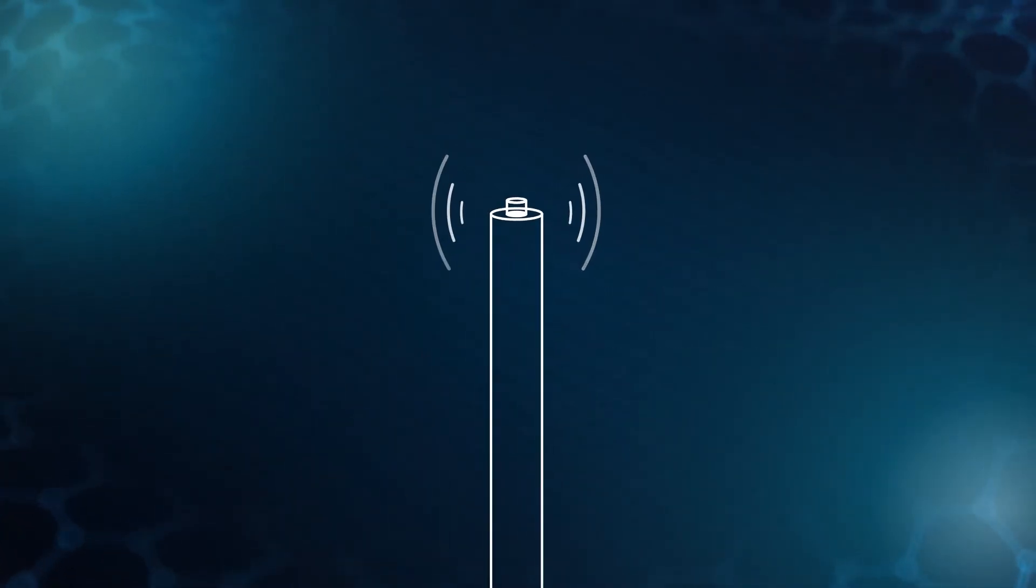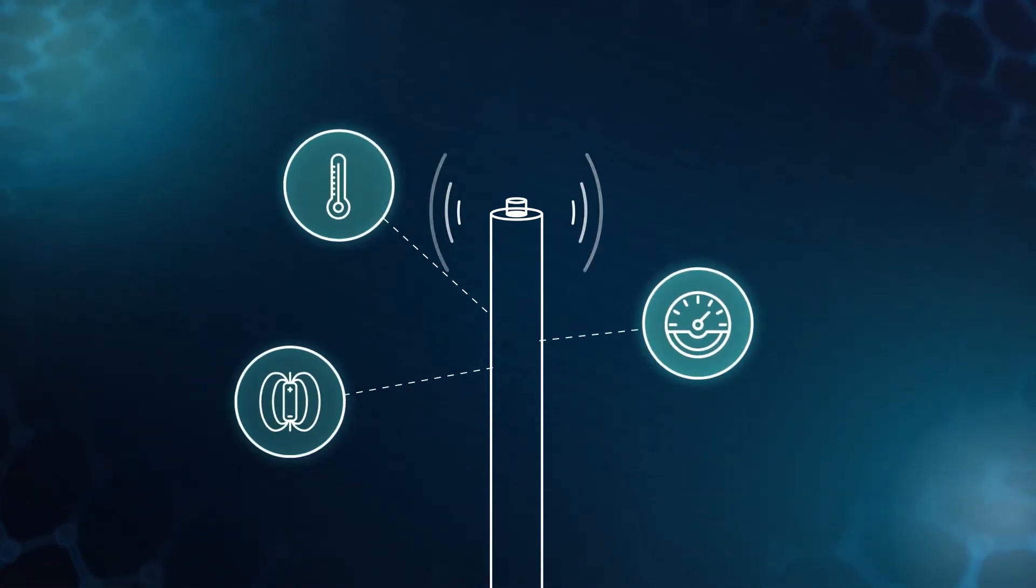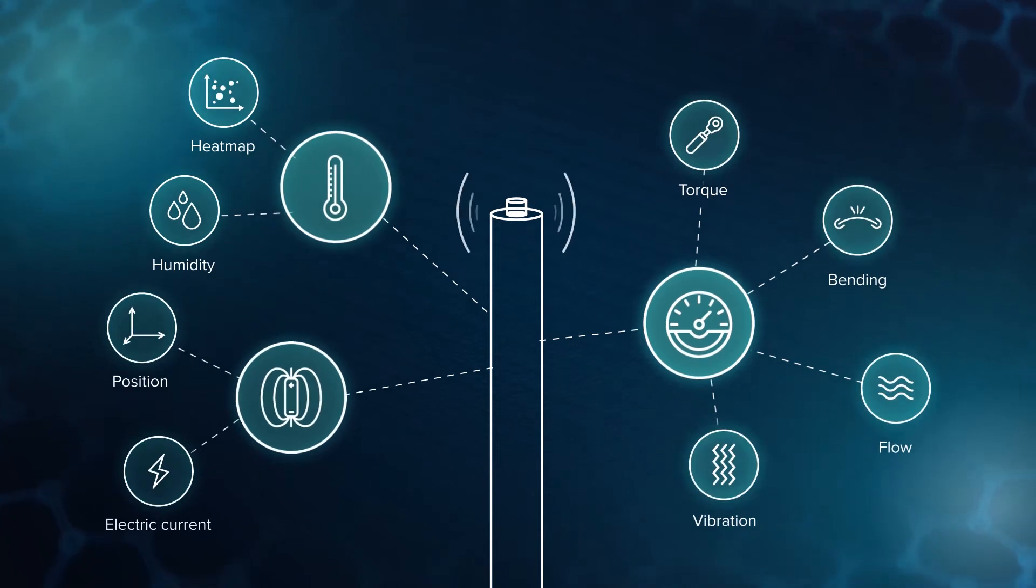The microwire can directly provide data on temperature, pressure, and magnetic field. It is also able to provide measurements on other physical quantities indirectly.